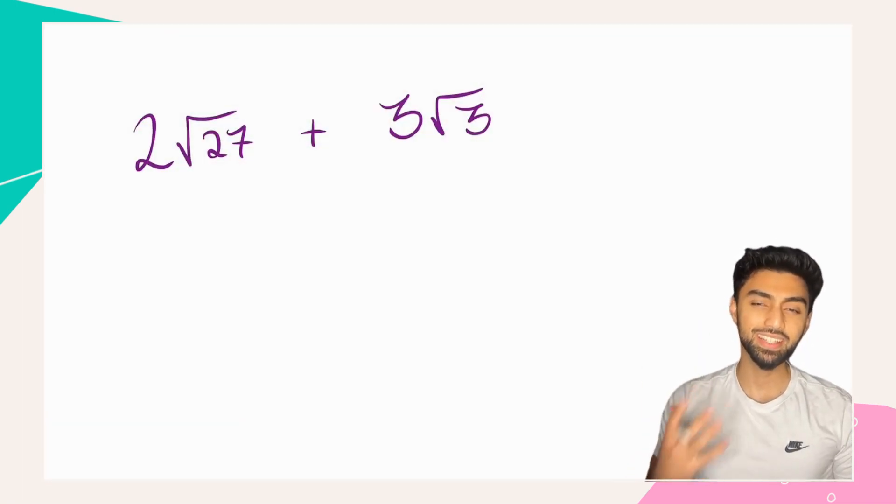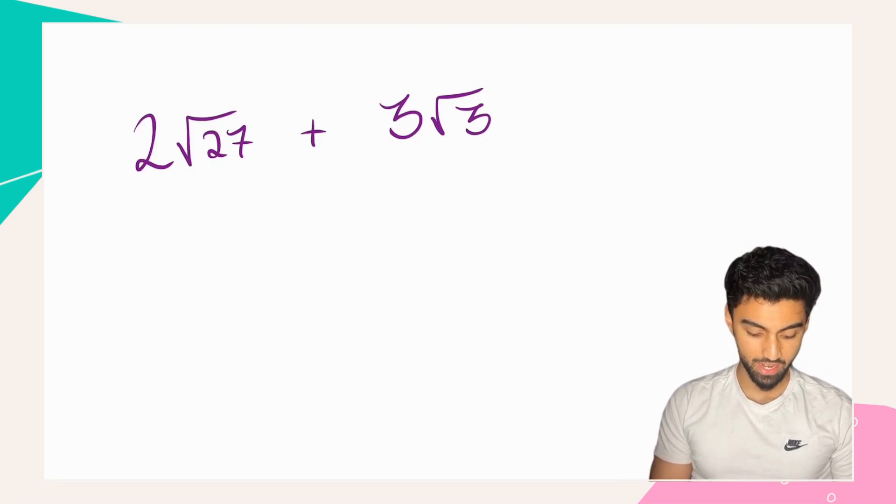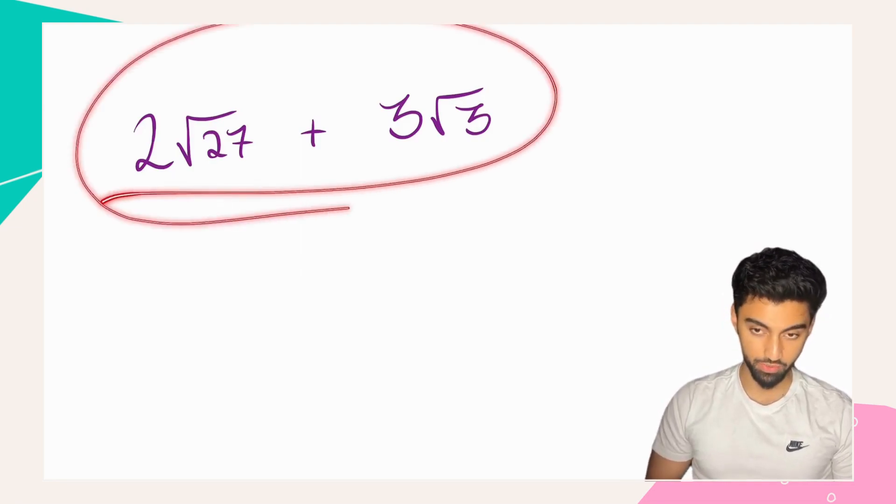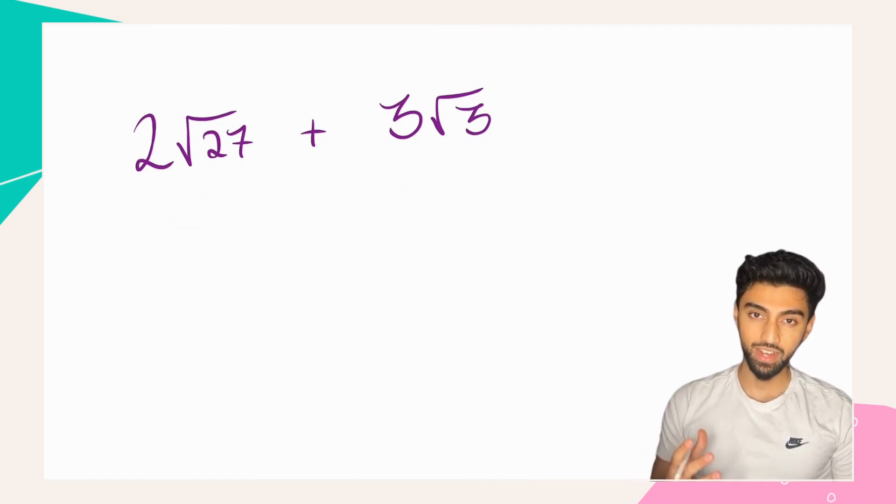Okay, so let's now look at a slightly more complicated example in which we have 2√27 plus 3√3. Now, at face value, it might seem that you cannot add these thirds.